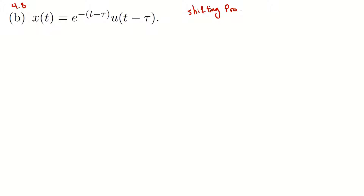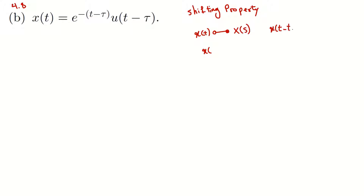But what is the shifting property? The shifting property says that for a given signal x(t), assume its Laplace transform is X(s). So if I shift x(t) in time, I would have x of t minus t0.